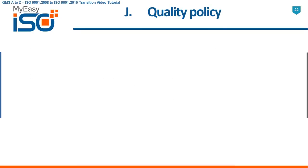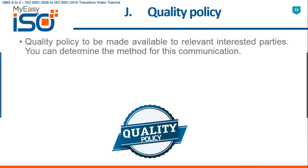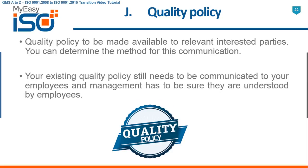J. Quality Policy. The Quality Policy is to be made available to relevant interested parties. Your existing Quality Policy still needs to be communicated to your employees, and management has to ensure it is understood by employees. You also need to make this Quality Policy available to relevant interested parties, and you can determine the method for this communication.